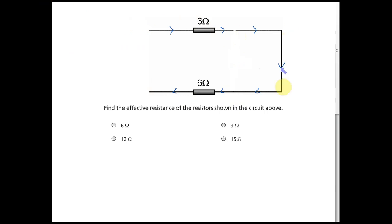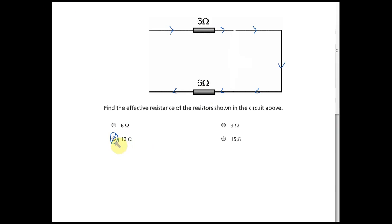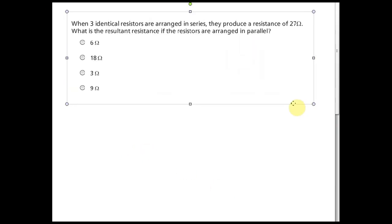Once the shorted resistors are removed, the circuit becomes a series circuit with 6 + 6 = 12 ohm effective resistance.